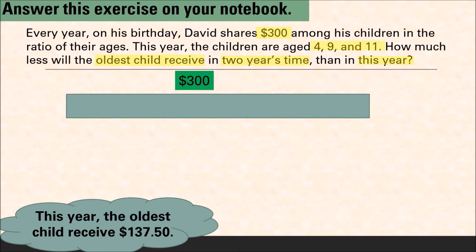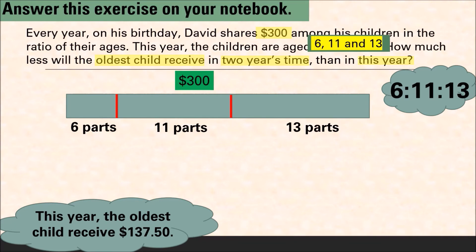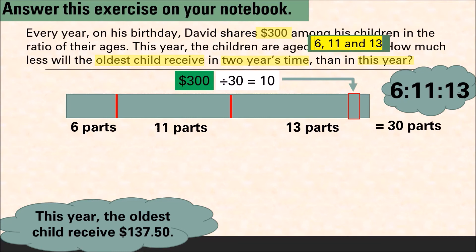Now we have to know how much the oldest child will receive in two years' time. After two years, the ages of the children will increase by two — they will be aged six, eleven, and thirteen. David will share three hundred dollars into the ratio 6 is to 11 is to 13, giving a total of thirty parts. Each part will be 300 divided by 30, which is ten dollars. The oldest child, now thirteen, gets 13 times ten, which is one hundred and thirty dollars.